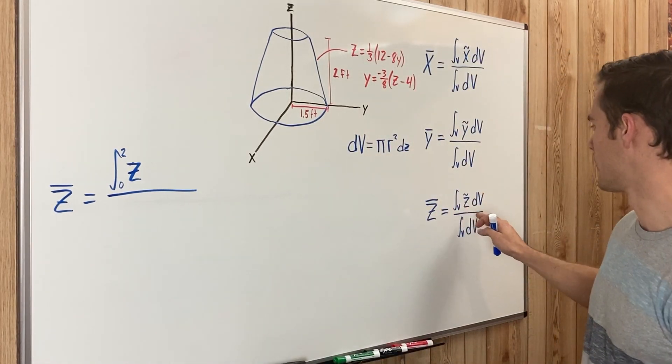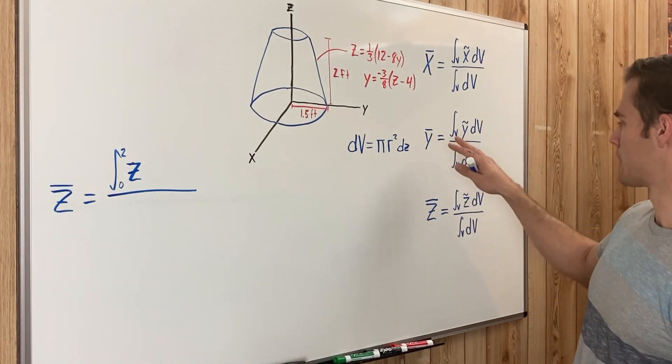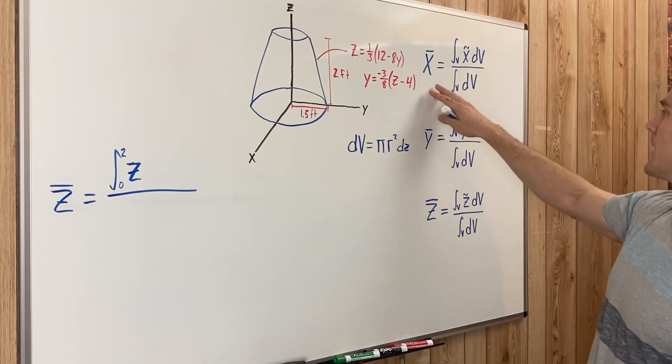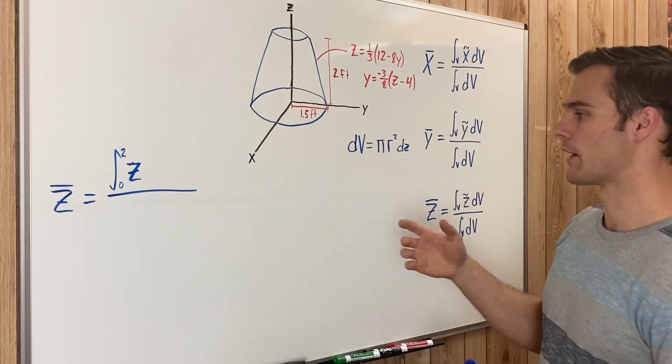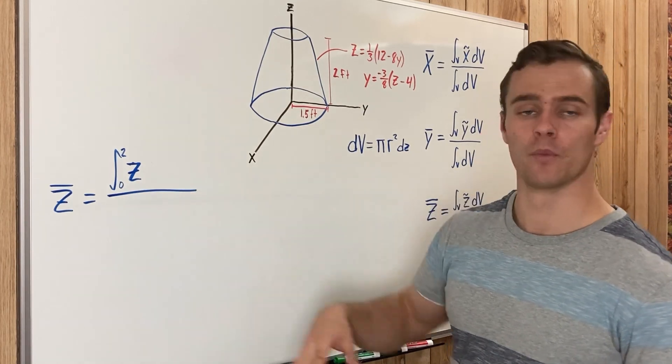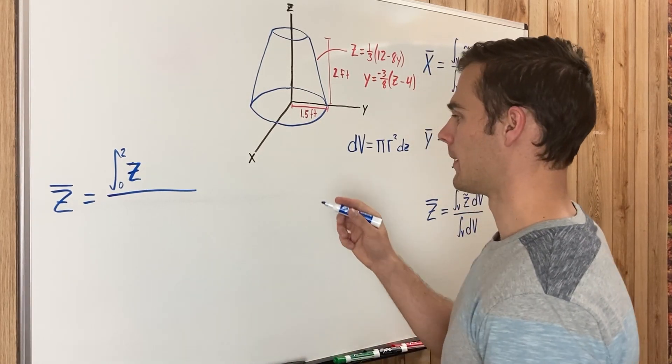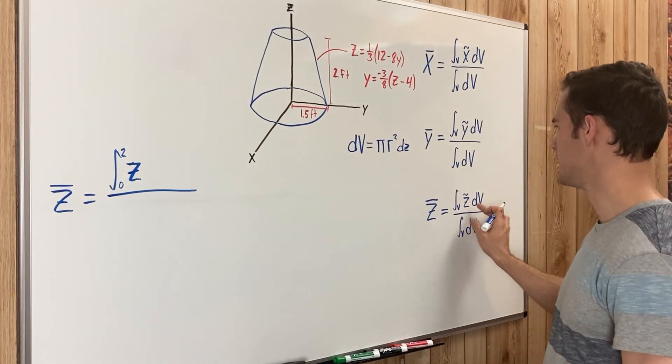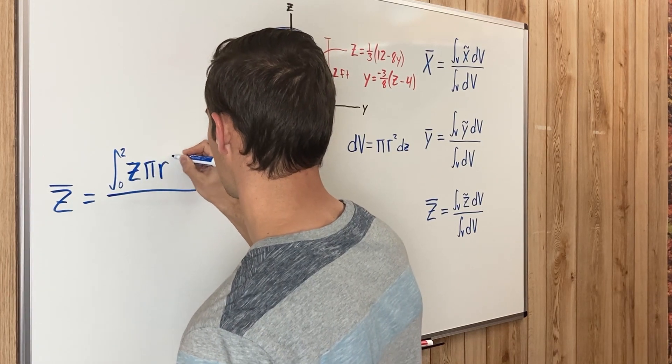So when we're integrating with respect to Z, our Z̃ is going to be just Z. If we're integrating with respect to Y, our Ỹ is just going to be Y. And likewise, if we're integrating with respect to X, X̃ is just going to be X. Now if we were integrating with respect to Y, Z̃ would be something different, but we don't need to worry about that in this case. So from there we have Z̃. Now we need to find what dV is, so we know that that is going to be πr²dz.